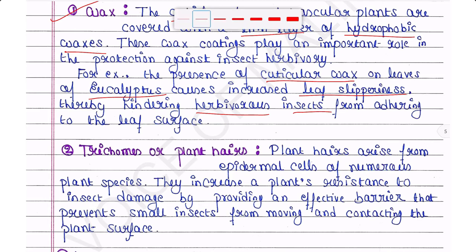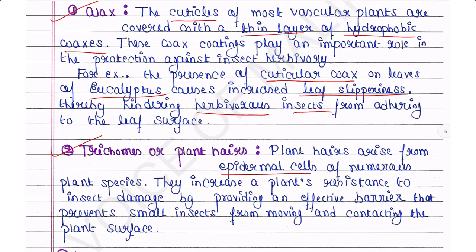Next are trichomes or plant hairs. Plant hairs arise from epidermal cells of numerous plant species and increase a plant's resistance to insect damage by providing an effective barrier that prevents small insects from moving and contacting the plant surface.